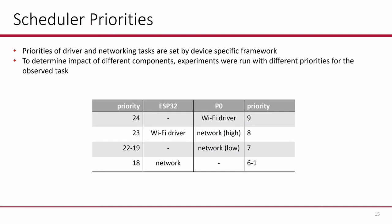It's also important to note that for the real Wi-Fi driver experiments, since the Wi-Fi driver and networking task are closed source, it was not possible to change the priorities inside the real-time operating system for those components, both on the ESP32 and the P0. So for our observed task, it was important to be as critical as possible. On the ESP32, the task can be prioritized above the Wi-Fi driver and preempt it if necessary. For the P0, this is not possible — the highest priority is shared with the Wi-Fi driver. You will see this in the results.